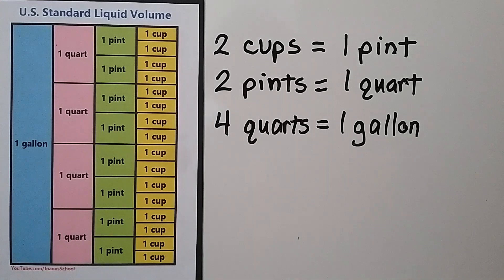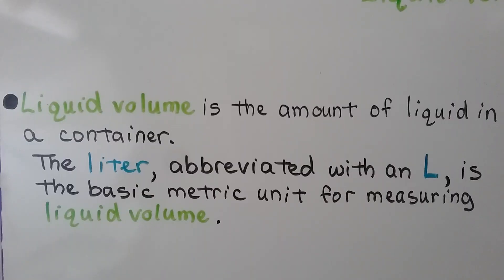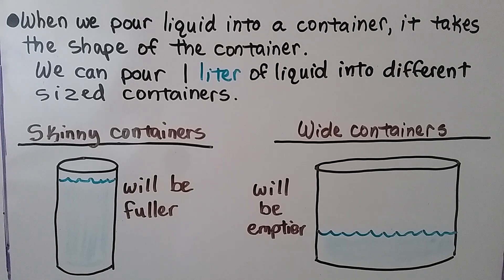Now let's talk about metric. Liquid volume is the amount of liquid in a container. The liter, abbreviated with a capital L, is the basic metric unit for measuring liquid volume. When we pour liquid into a container, it takes the shape of the container.